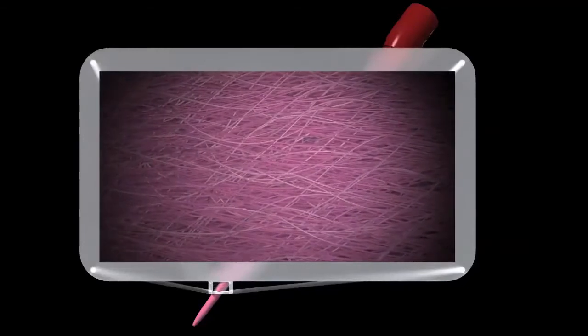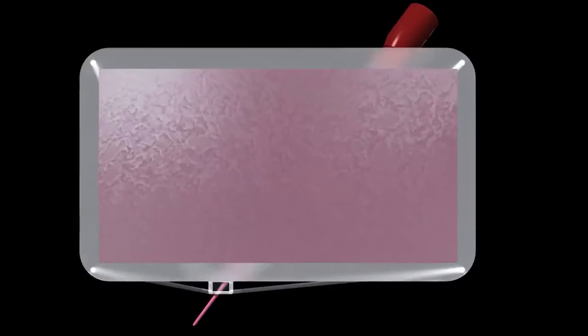As the camera zooms in, we see the difference. A pink core made of cross-linked gutta-percha.